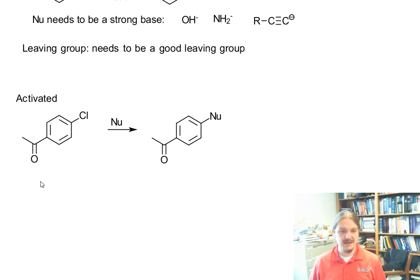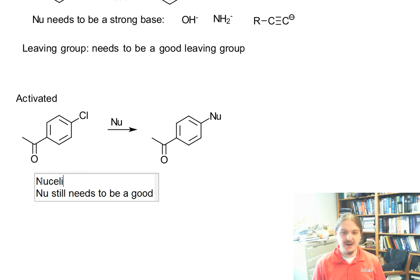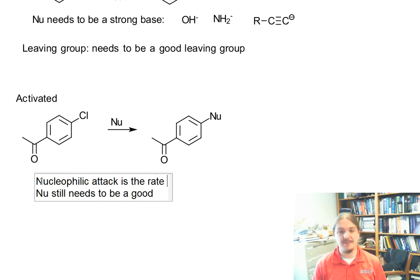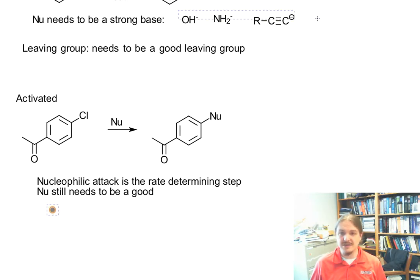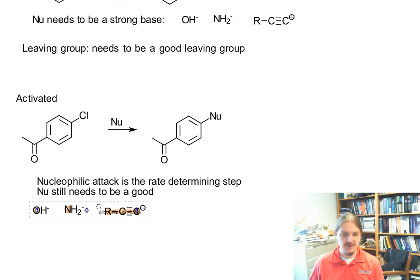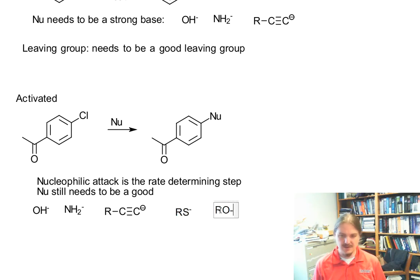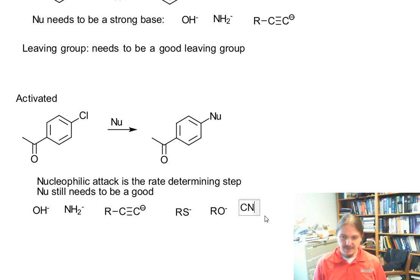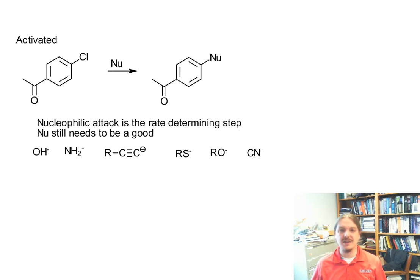Now, these reactions don't necessarily need heat. In these reactions, nucleophilic attack is the rate-determining step. So we still need a really good nucleophile, but in addition to the strong basic nucleophiles I talked about previously, other really strong nucleophiles are going to be good here. The types of nucleophiles used in SN2-type reactions are not always going to be good enough here, so things still need to be on the basic end. Maybe the least basic thing that might work here is the cyanide anion, and then only if the arene is pretty activated.